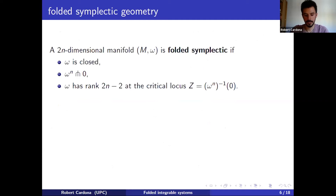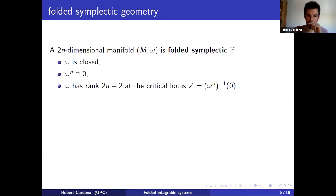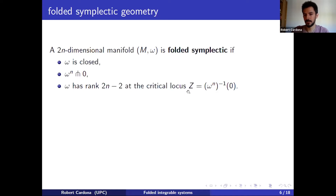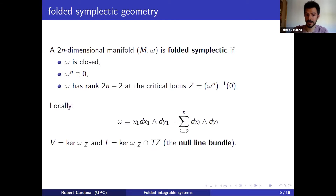Let us now address the folded symplectic case. Here it is no longer a Poisson structure. It is a two-form which is closed, and we ask for a transversality condition — but now on the two-form, not on the bivector field. This transversality does not imply that the rank is 2n−2 in the critical locus; we need to impose it. The critical locus Z is again a hypersurface, which may be non-connected. There is a Darboux theorem due to Martinet.